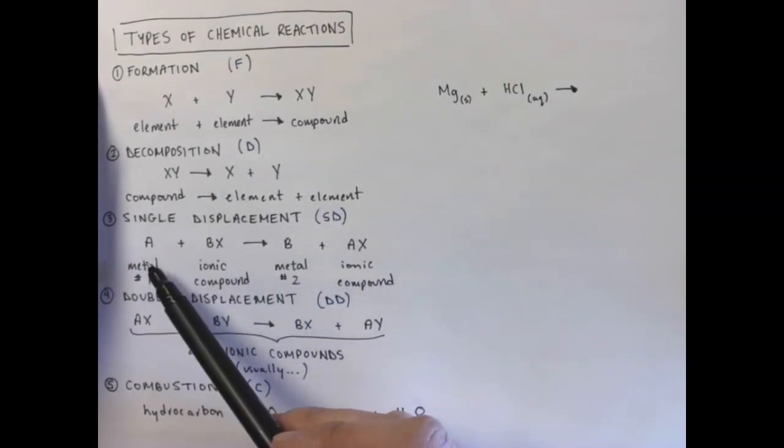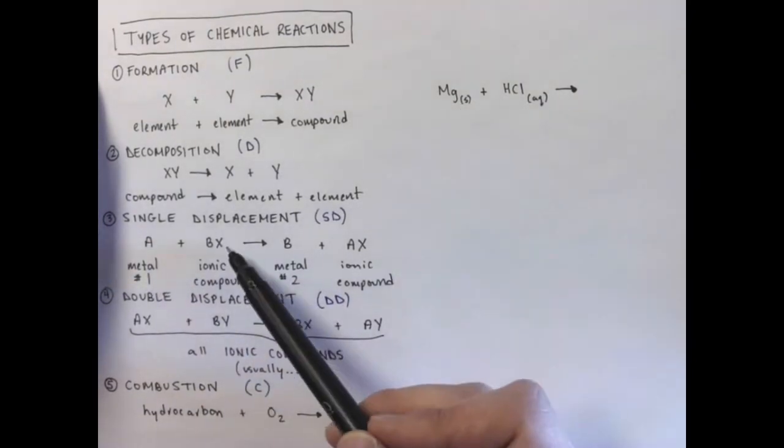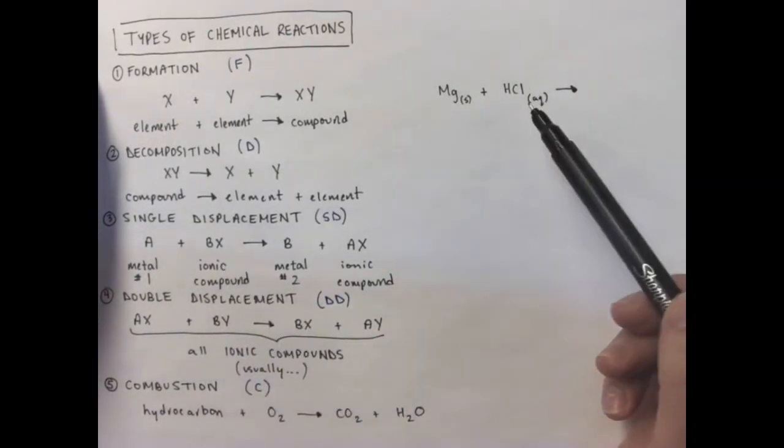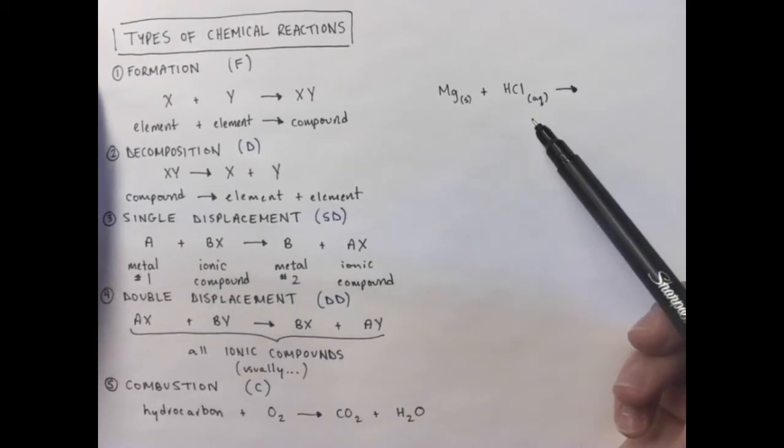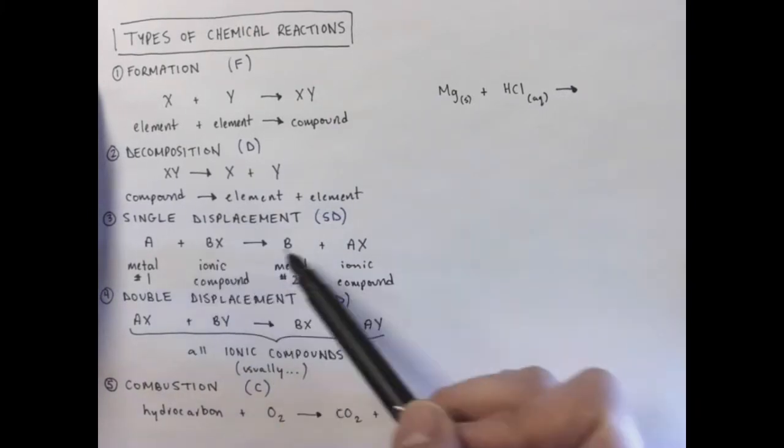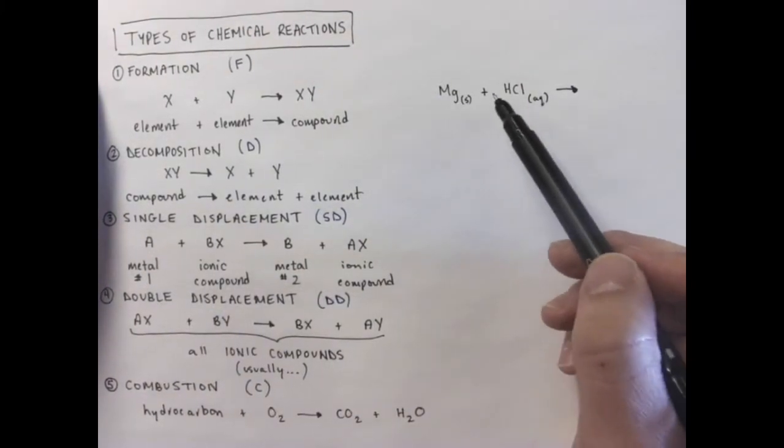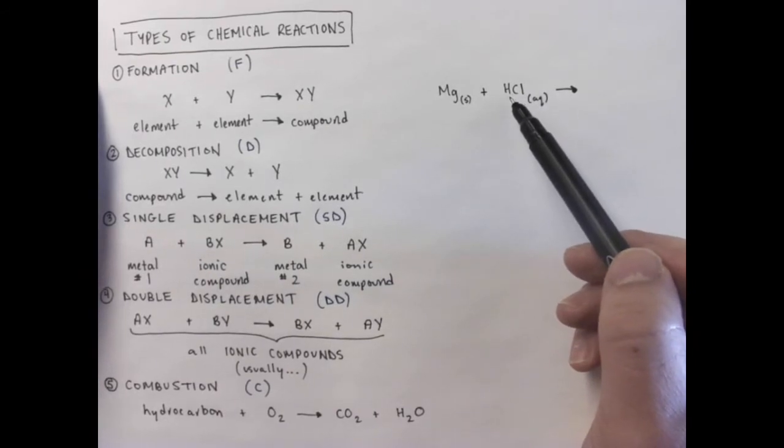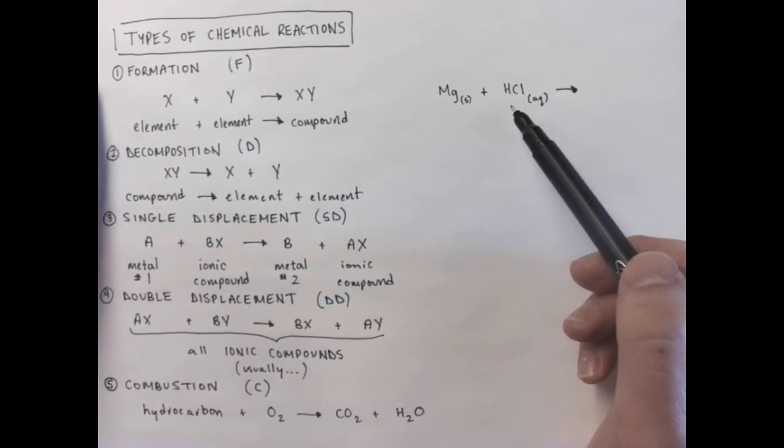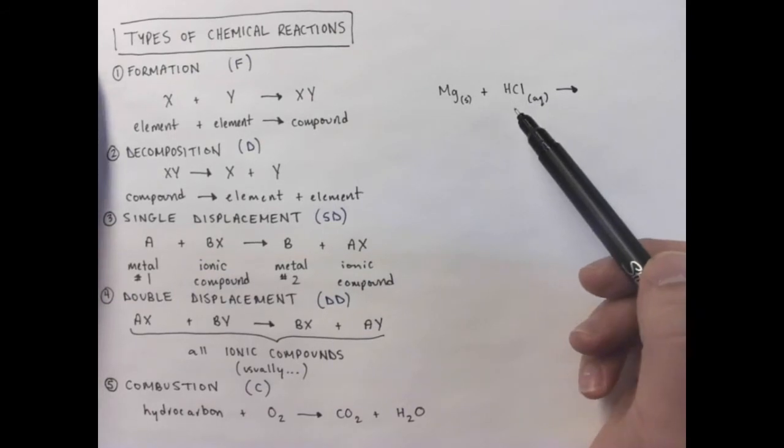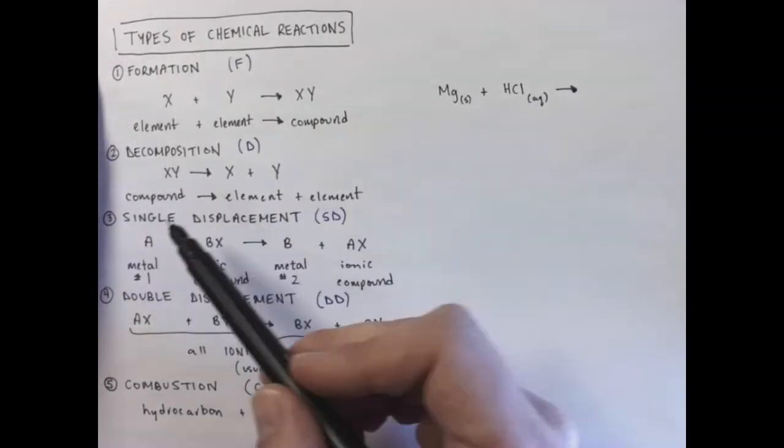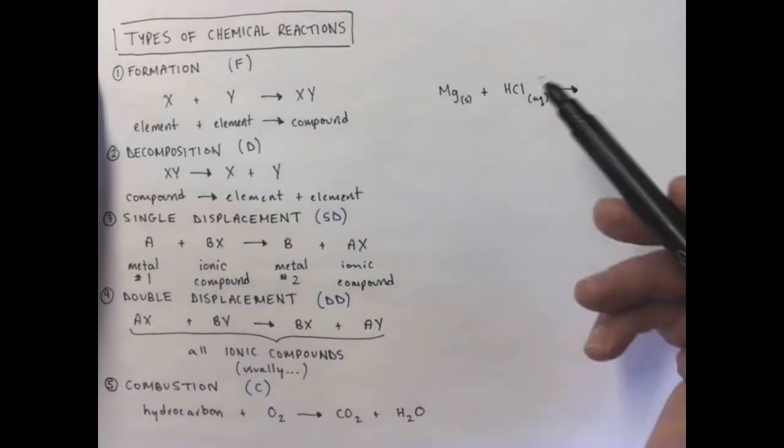Single displacement, we usually start with a metal. Check. And we have an ionic compound. Check. Remember, hydrochloric acid is basically, I shouldn't say basically, I shouldn't say acidically, an ionic compound. So this is actually looking like a good candidate because it looks like the magnesium should be able to kick out the hydrogen. And remember, with acids, hydrogen, the hydrogen in an acid effectively acts like a metal.